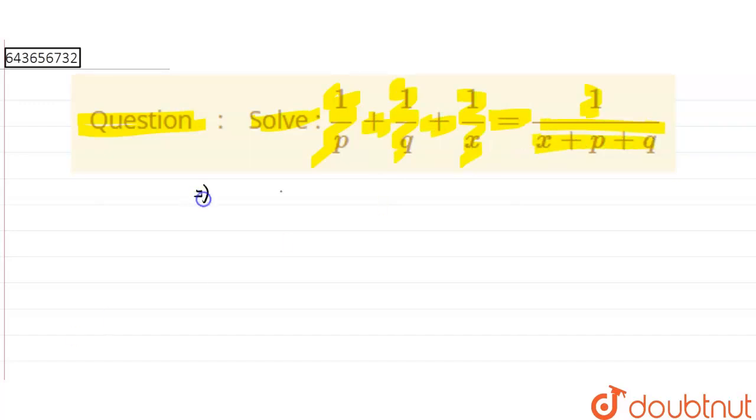So first we will write this equation as it is: 1/p + 1/q + 1/x equals 1/(x + p + q).